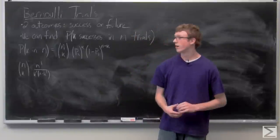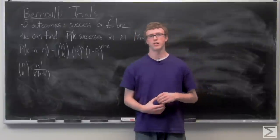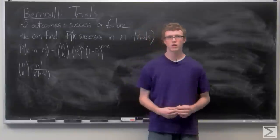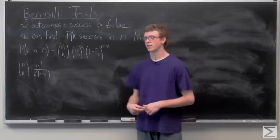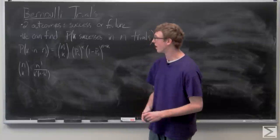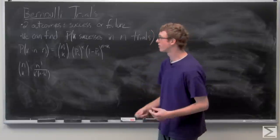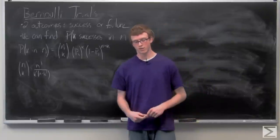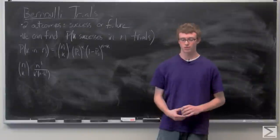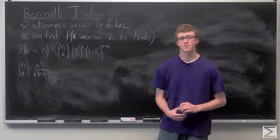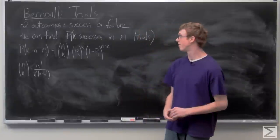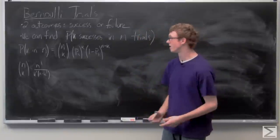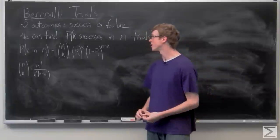So a Bernoulli trial is a trial where an experiment only has two possible outcomes, a success or a failure. We can apply that to pretty much any probability. For example, if we're looking at a dice roll and we want a one, we can look at the one as a success and anything else as a failure. And we can say that there's a one-sixth probability of success.